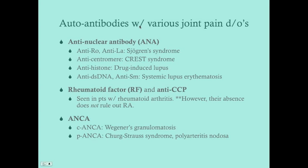Key autoantibodies: Anti-Ro and Anti-La are associated with Sjögren's syndrome. Anti-centromere is associated with CREST syndrome. Anti-histone is associated with drug-induced lupus. Anti-dsDNA and anti-Smith are associated with systemic lupus erythematosus. Rheumatoid factor and anti-CCP are seen in rheumatoid arthritis, but their absence does not rule out RA. c-ANCA is associated with Wegener's granulomatosis, and p-ANCA is associated with Churg-Strauss and polyarteritis nodosa. Think of ANCA with the vasculitides.